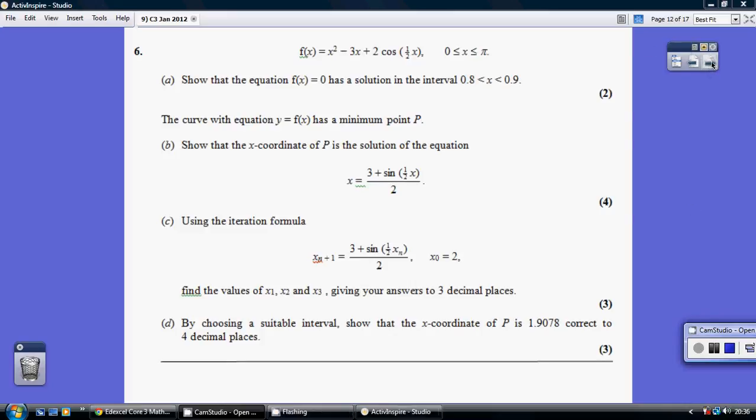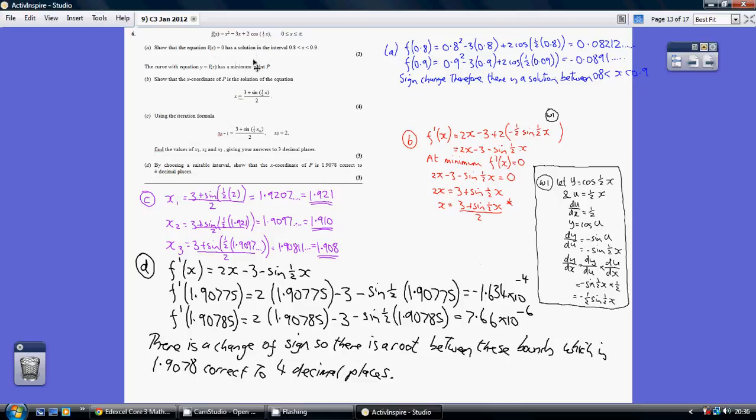Question 6. To show that this is a solution between 0.8 and 0.9, we start by substituting 0.8 in and get a very small positive number. We substitute 0.9 in and get a very small negative number. There's a sign change, therefore there is a solution between these two bounds, between 0.8 and 0.9.